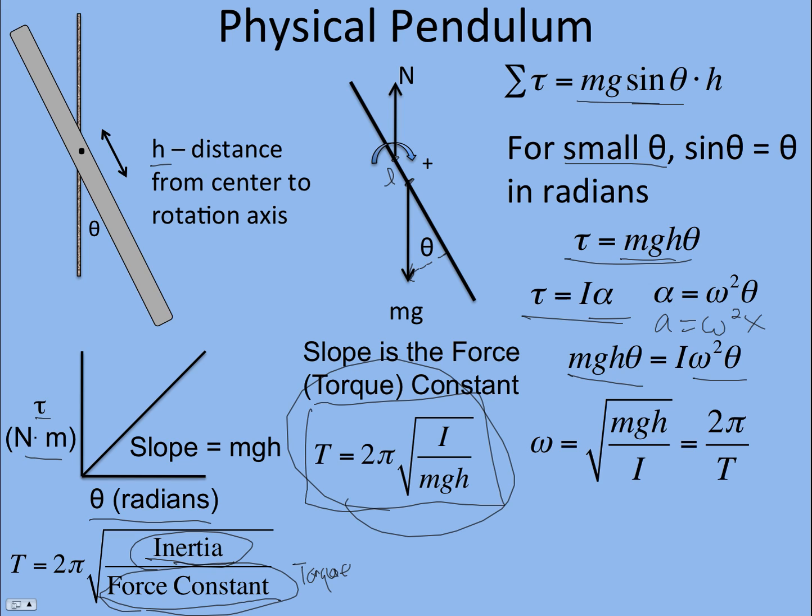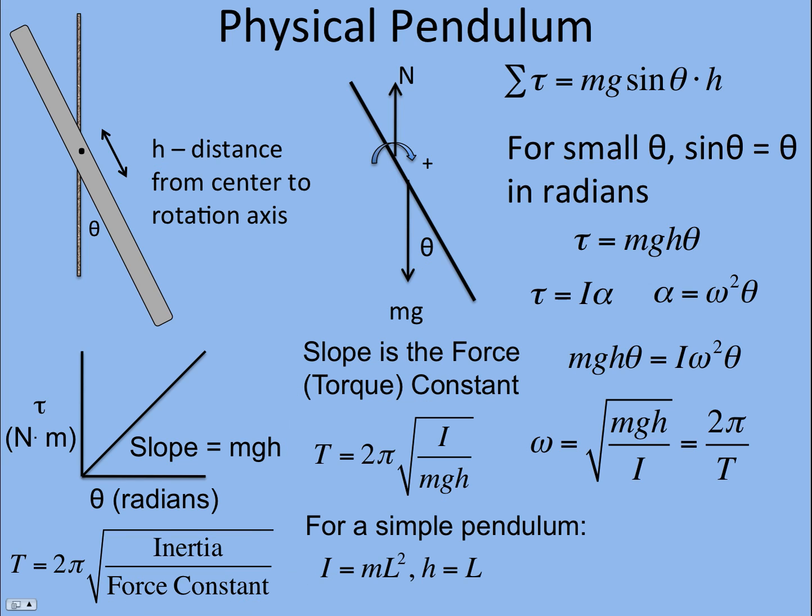Now I mentioned when we did simple pendulum that you could also treat simple pendulum this way with torque equals Iα. If you do that, the I is for a particle because it's a simple pendulum, we don't have an extended object. So we just say it's mr², or in this case, L is the radius of swing for a simple pendulum, and that is also the distance from the center of the simple pendulum to the rotation axis.